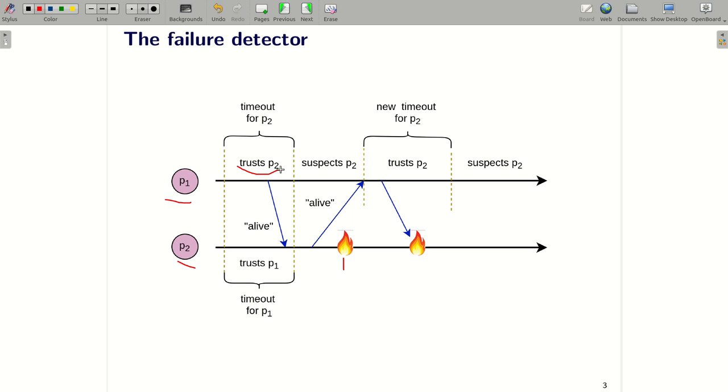Moreover, there are timeouts to show how long a process should wait for another. For instance, it is the timeout of P1 for P2. And every correct process repeatedly sends alive messages to others to inform that it is working normally. For example, it is an alive message from P1 to P2. And because P2 receives a message from P1, P2 still trusts P1.